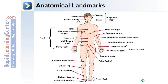Key regions of the body can be described using anatomical landmarks. Using this image, let's describe the different regions of the body. Beginning with the head, the forehead, the buccal or cheek, and the chin make up the cranium and facial regions, which together make up the cephalon or head. The trunk of the body includes the thorax, the mammary or breast, the abdomen, and the umbilicus or navel, as well as the pelvis.